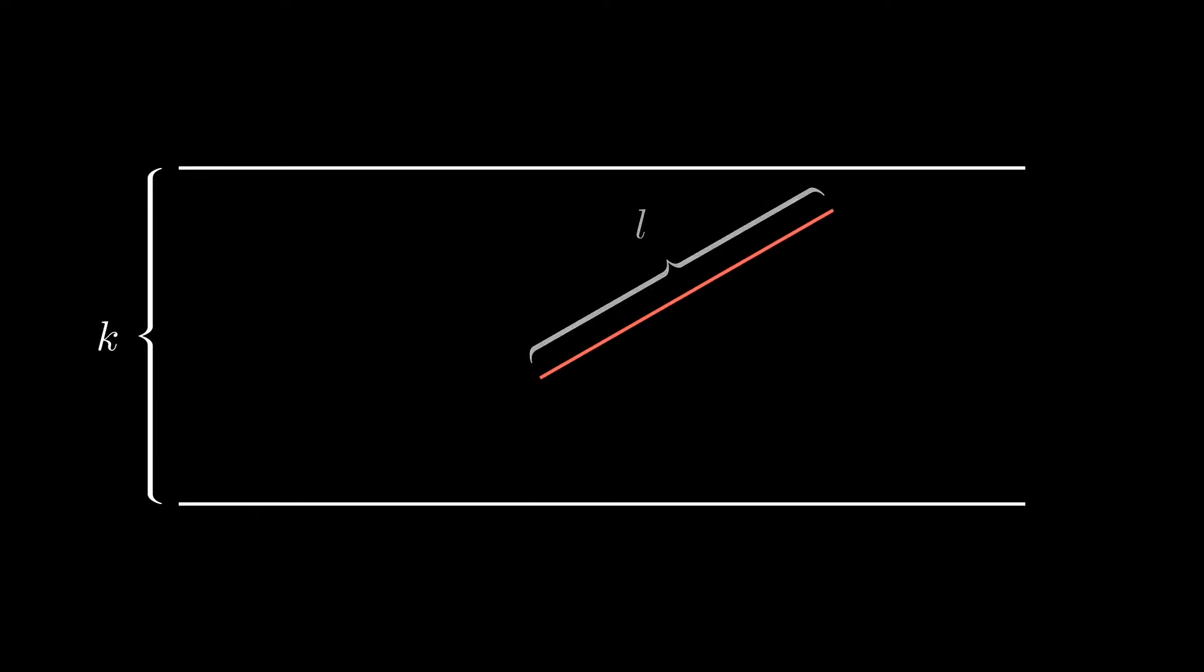Let's take a closer look at what is happening when we drop a needle. We'll define the distance between two lines as k, the length of the needle as l, and the smallest distance between the center of the needle and a line as d.